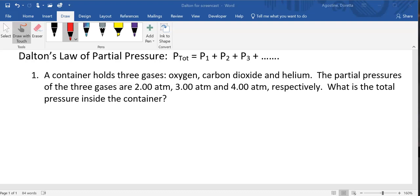As always, I'm going to start by identifying the variables. So partial pressure of oxygen is 2.00 atm, the partial pressure of carbon dioxide is 3.00 atm, and the partial pressure of helium is 4.00 atm.